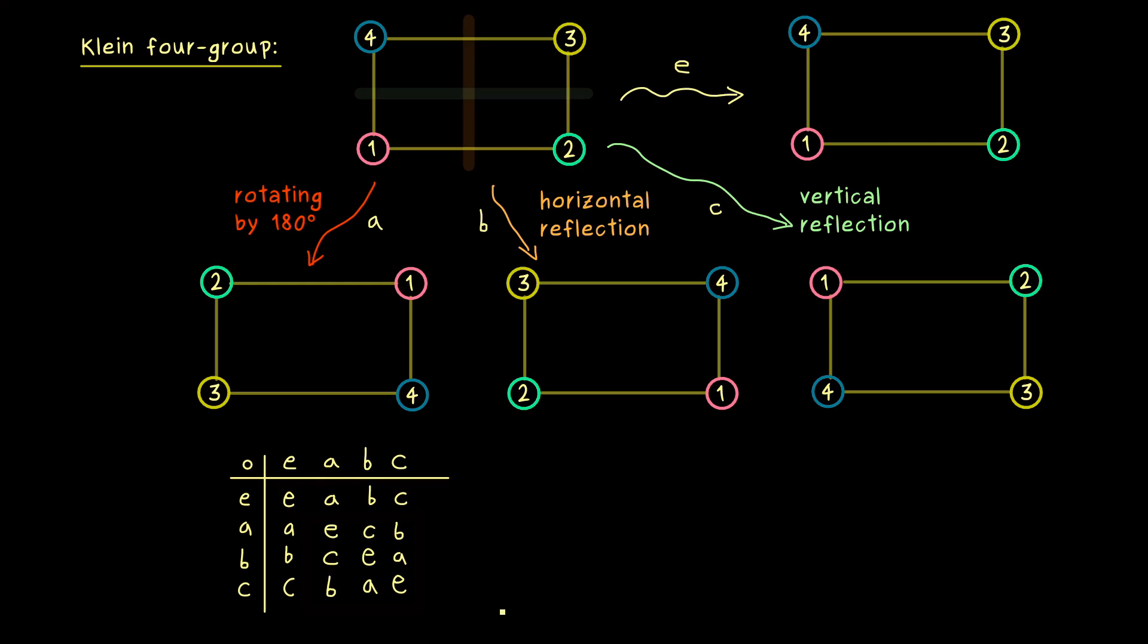This is the whole table, which we can see as the definition for the binary operation here. So you only have to check the associativity here. There we can simply go through all possible cases and we see it works. That's it. Now we have a well-defined group and it's called the Klein four-group.